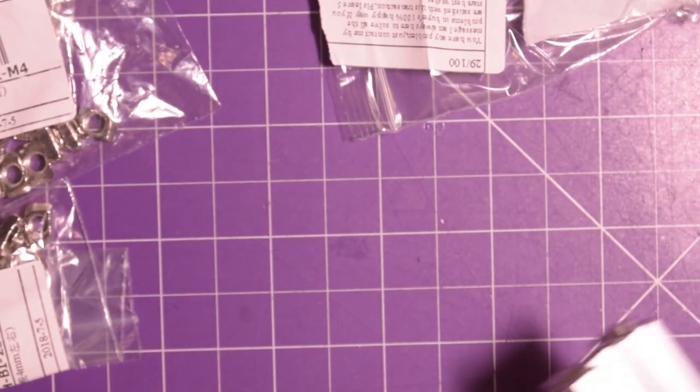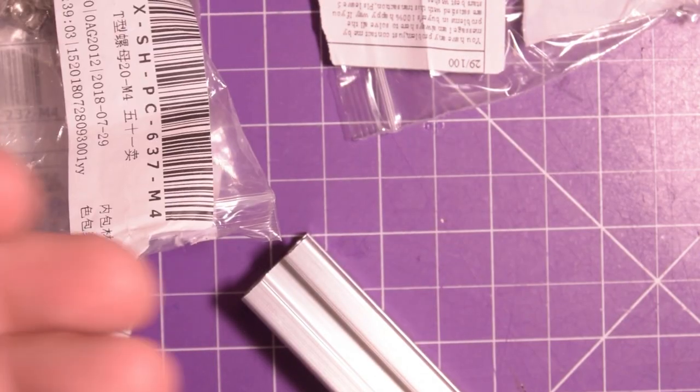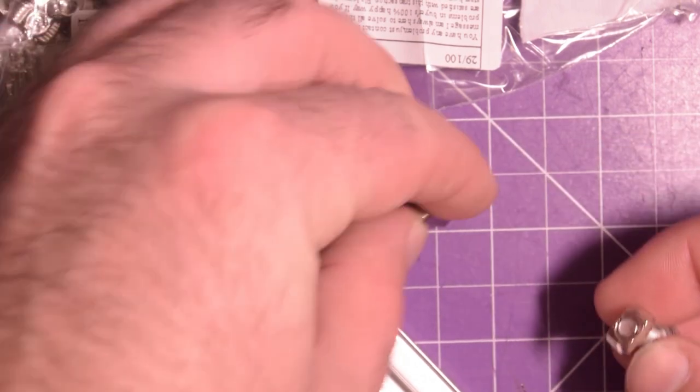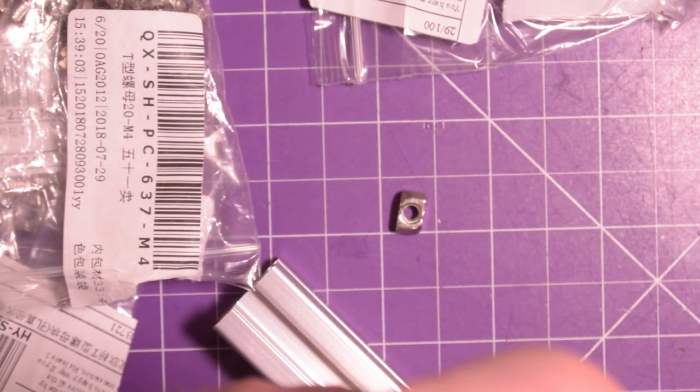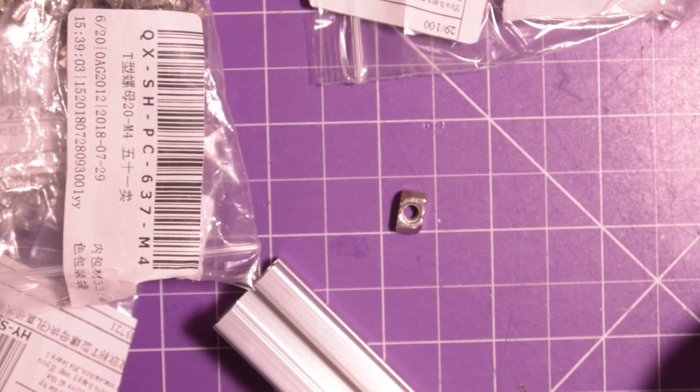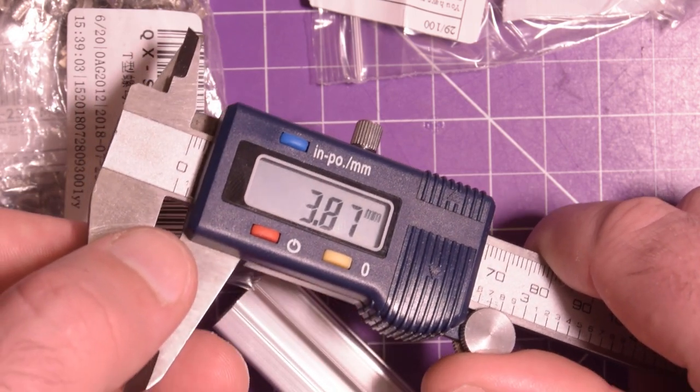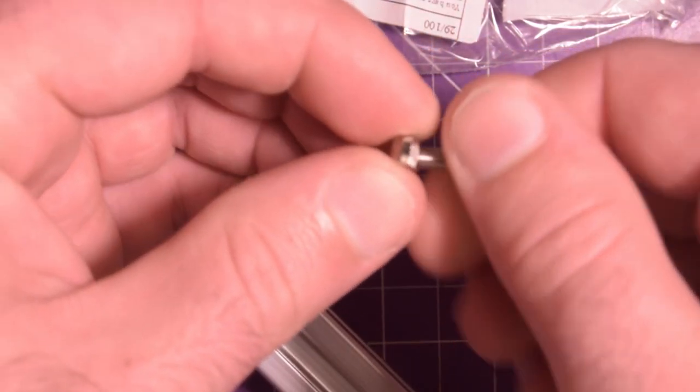On the other end we've got these little guys. They should be the same outside dimensions but the threading should be for m4. You can see that hole is a bit bigger than that hole. We'll see if this fits an m4 screw. Yep, it's a perfect fit.